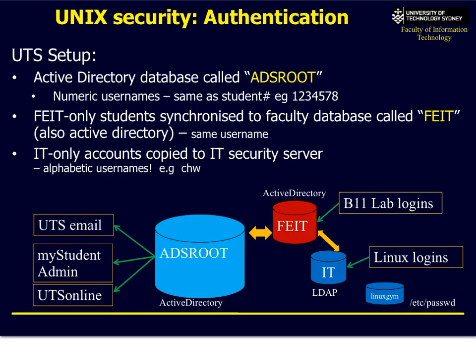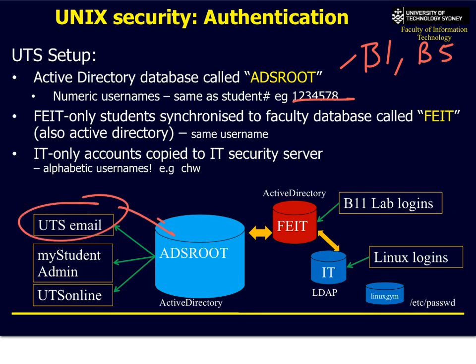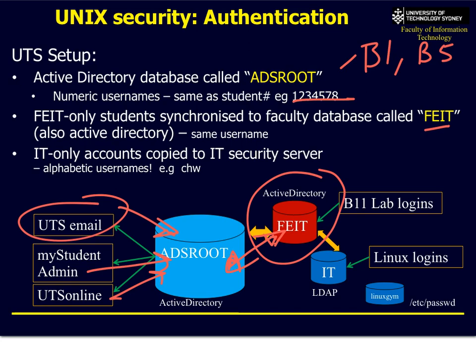At UTS we're set up with a central database called ADS Root. Whenever you log on to any workstation — building 1, 5, or 4 — you log in using your student number and email password. It's the same password. Email, My Student Admin, and UTS Online all use the same user ID and password — it's the same system. Students from outside the faculty may have access issues because the Faculty of Engineering and IT has its own separate directory called FATE, with the same user ID and password linked to both systems via synchronization. The update happens every hour or few minutes, so if you change your password in one system it changes in the other as well.